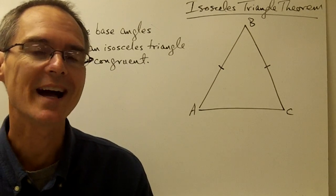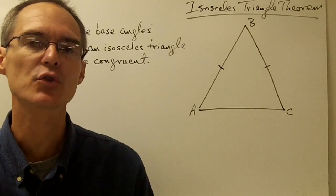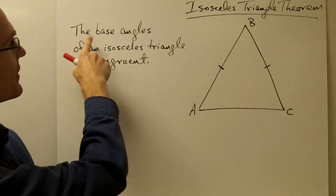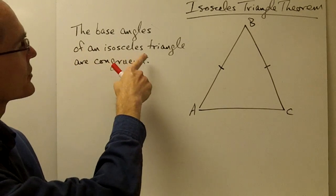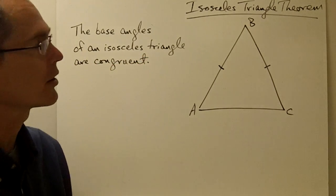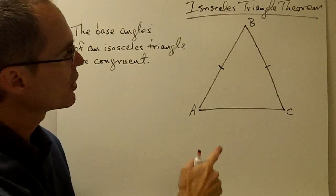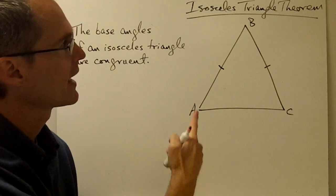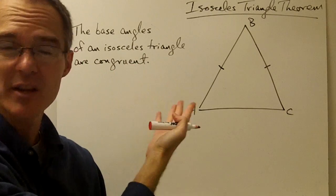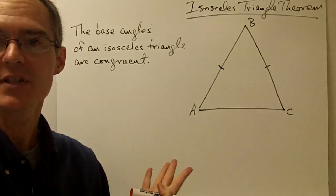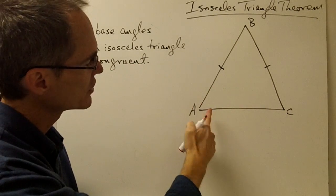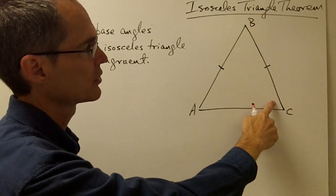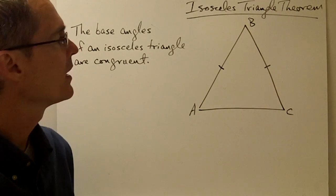In this video we're going to prove the isosceles triangle theorem. The isosceles triangle theorem says that the base angles of an isosceles triangle are congruent. Here we have an isosceles triangle, and in order to prove this statement, what we want to do is show that angle A in this triangle is congruent to angle C.